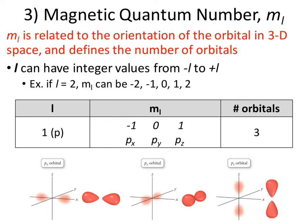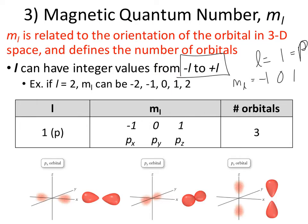Number 3 is our magnetic quantum number, which is m sub l. This is related to the orientation of these orbitals in 3D space, and it also defines the number of orbitals. The possible values are negative l to positive l. So if l equals 1, m sub l would be negative 1, 0, and 1. An orbital where l equals 1 would be a p orbital.